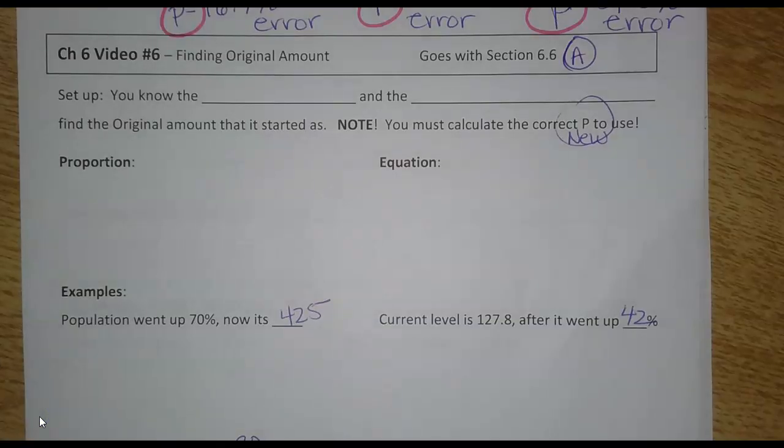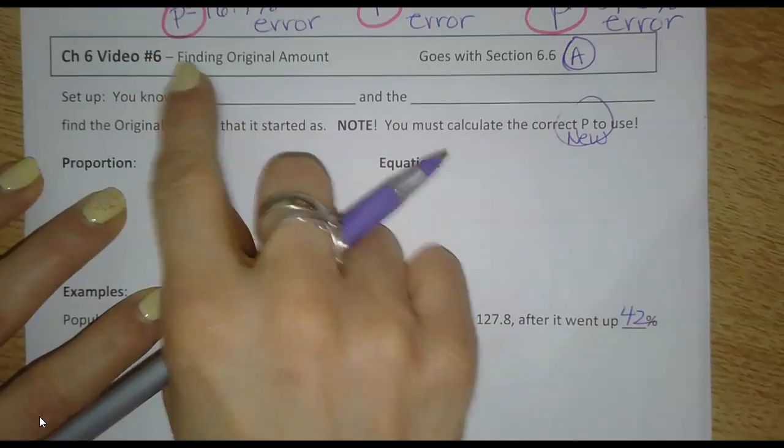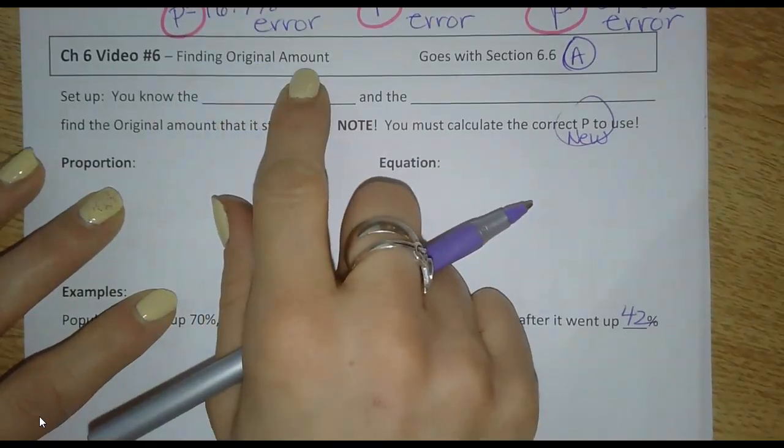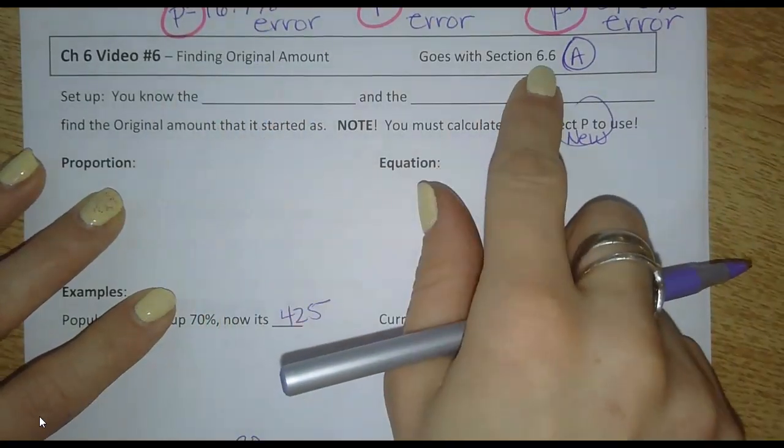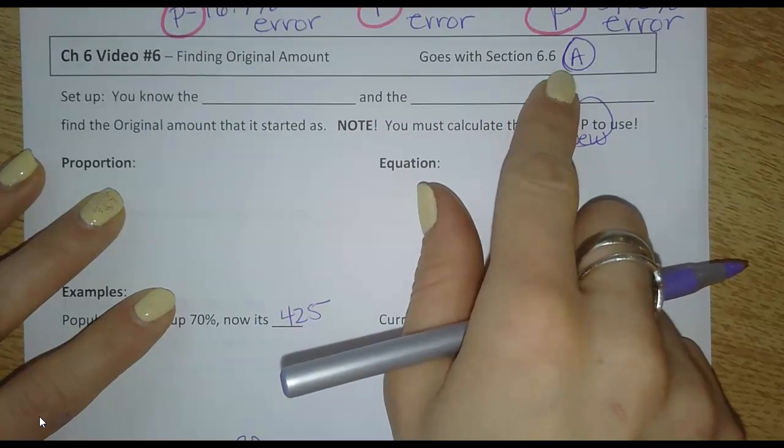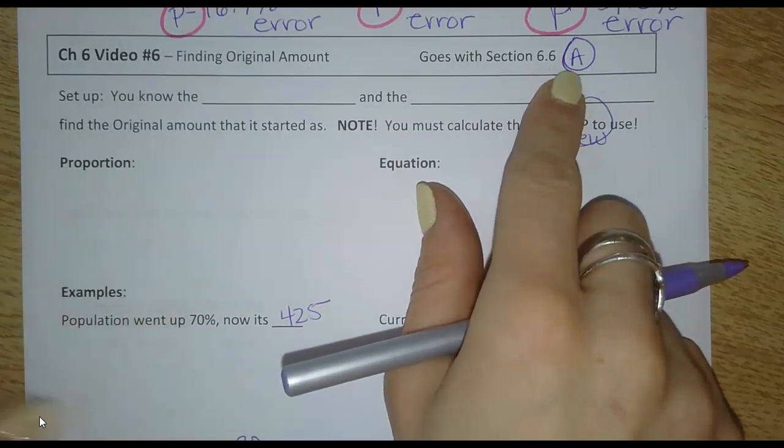Okay, moving on to chapter 6, video 6. Here we're going to be finding the original amount. And this actually goes with section 6.6, but again, there's going to be two videos for this section, so we'll call it 6.6 video A.